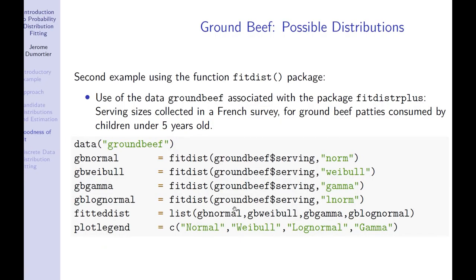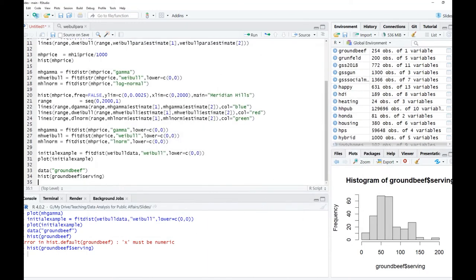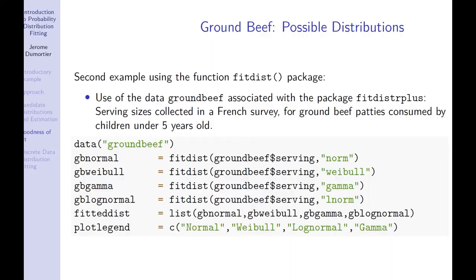Here we do not know anything about the possible underlying distributions, so we have to make guesses. We are going to assume four possible candidate distributions: the normal distribution, the Weibull, the gamma, and the log-normal distribution. Note that the normal distribution is probably not a good fit, but it is included for explanatory purposes. What I am going to do is use fitdist for each of the four distributions, and then combine the estimates in a list.